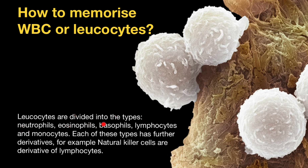Neutrophils, eosinophils, basophils, lymphocytes, and monocytes. Each of these types has further derivatives. For example, natural killer cells are a derivative of lymphocytes.